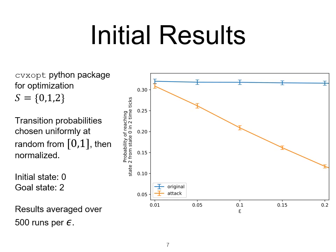We use the cvx optimization package in Python to solve our optimization problem. We consider a very simple example with only three states—0, 1, 2. The initial state is 0 and the goal state is 2. And we perform a number of experiments with probabilities chosen uniformly and randomly and average the results.